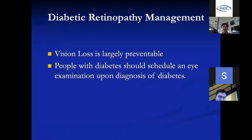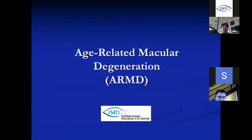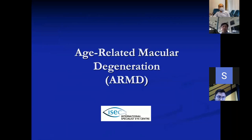To summarize: diabetic retinopathy vision loss is largely preventable with timely assessment. Patients should have an eye examination upon diagnosis of diabetes because changes may already be present. They should see an ophthalmologist at least once a year. The role of the optician is: if you have a patient with diabetes and their OCT shows changes, send them to the nearest eye doctor for treatment as soon as possible.